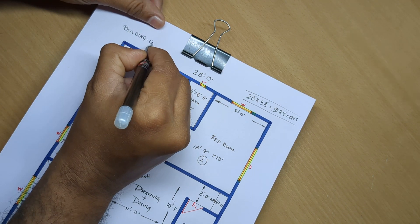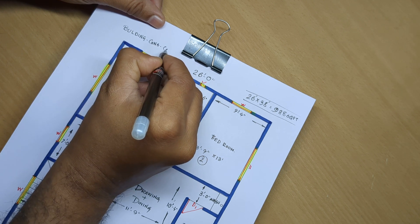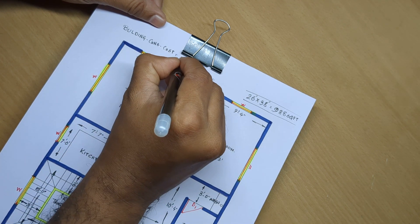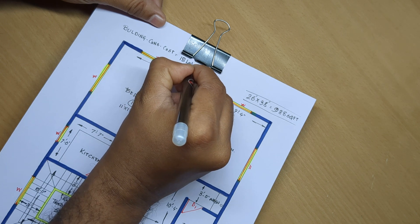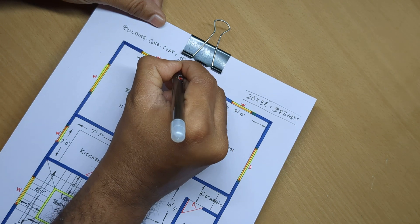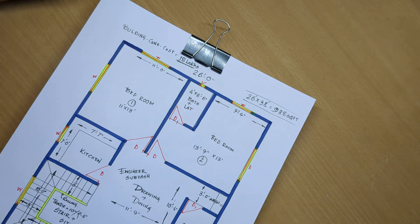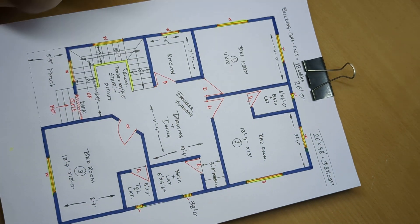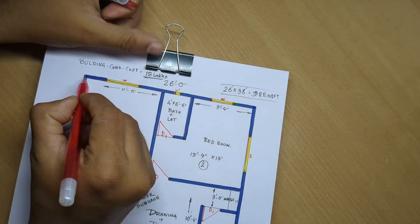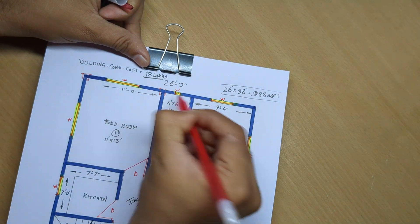Building construction cost 18 lakhs rupees. Column ke andar column position set karo.